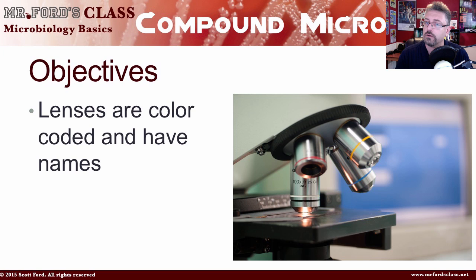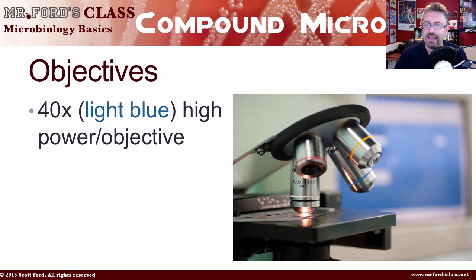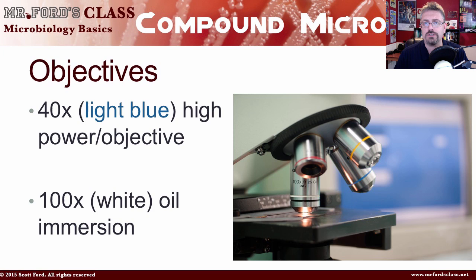Let's look at the color coding of the objectives, because they are color coded. You have the 4x scanning objective, the 10x which is considered low power, the 40x which is considered high power, and the 100x which is the oil immersion objective. You need to know not just the magnification but also the names, because exams will ask things like 'what's the magnification of the scanning objective?' — which is 4x.